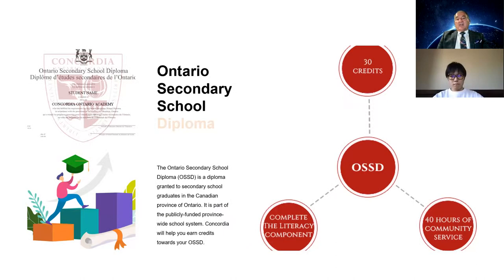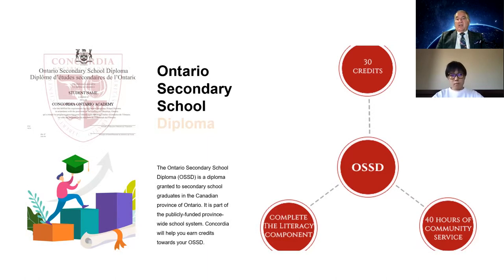The Ontario Secondary School Diploma, or OSSD, is granted to secondary school graduates in the Canadian province of Ontario as part of the publicly funded province-wide school system. Concordia will help you earn credits towards your OSSD. In Ontario, to graduate, students must earn 30 credits, complete a literacy component, and complete 40 hours of community service. We'll share more information about those requirements in the months to come.